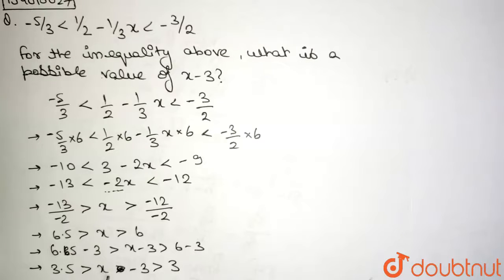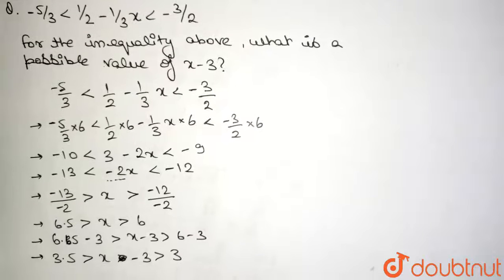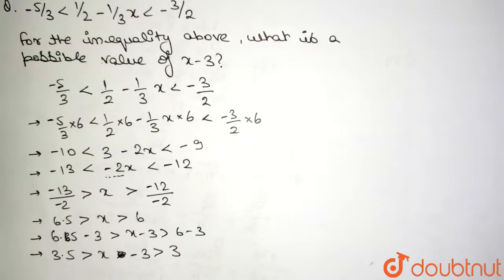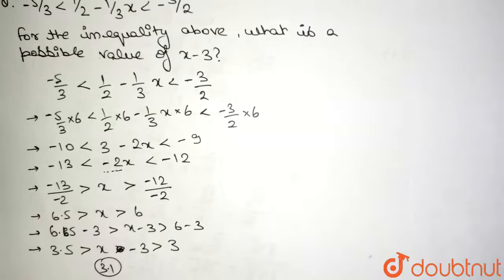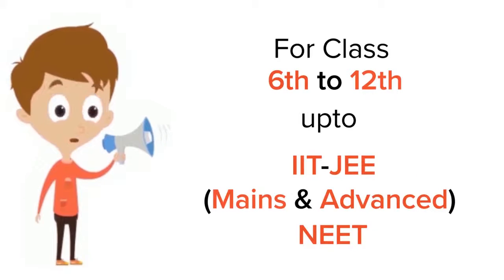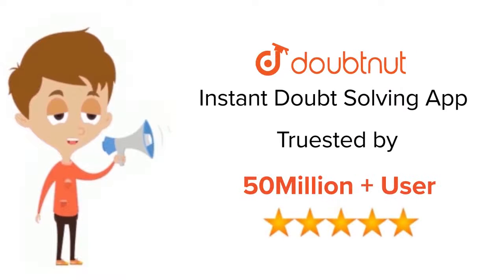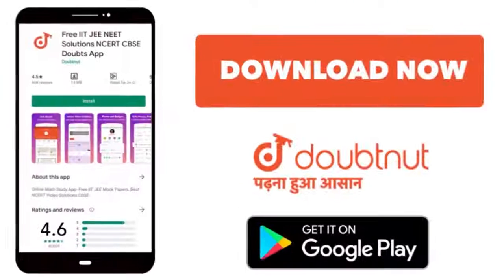Now one possible such value for x minus 3 is 3.1. That's it guys, thank you for watching. This is trusted by more than 5 crore students. Download Doubtnut app today.